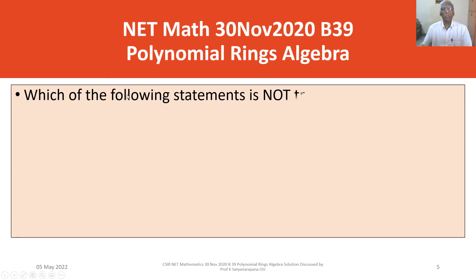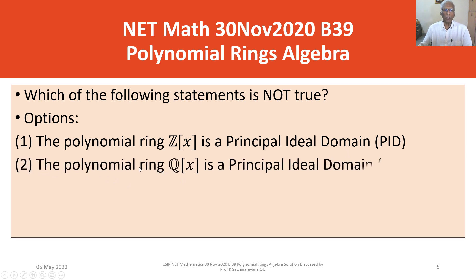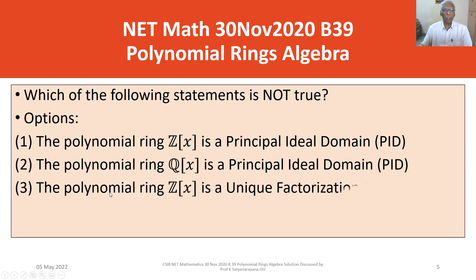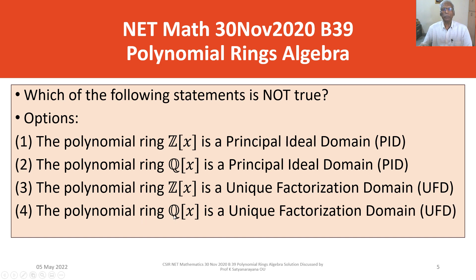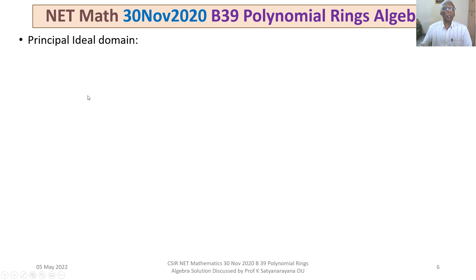The problem asks: which of the following statements is not true? The four options are: Option 1 — the polynomial ring Z[X] is a principal ideal domain (PID); Option 2 — the polynomial ring Q[X] is a PID; Option 3 — the polynomial ring Z[X] is a unique factorization domain (UFD); Option 4 — the polynomial ring Q[X] is a UFD.